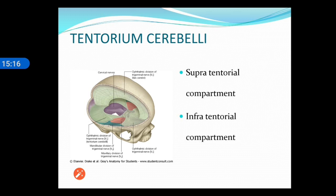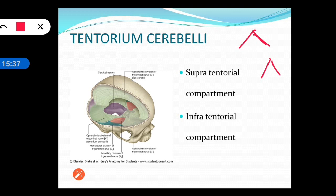Next we will see the tentorium cerebelli. Tentorium means tent sheet. The falx cerebri attaches to the upper surface of the tentorium cerebelli, and because of this attachment it pulls the tentorium cerebelli in such a way that it looks like a tent. Underneath the tentorium cerebelli is present the cerebellum.